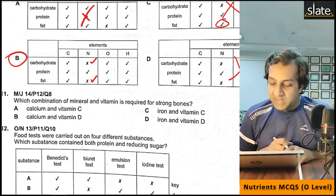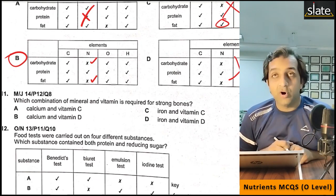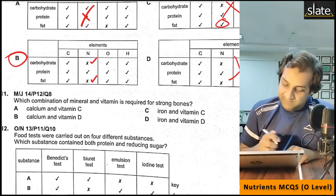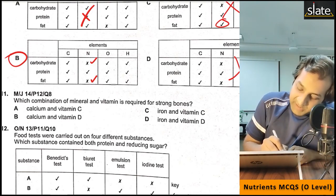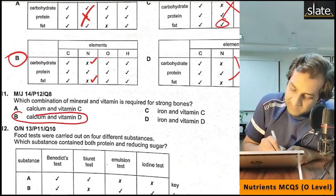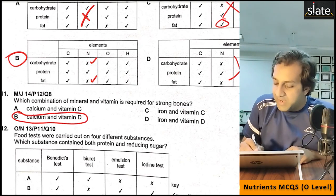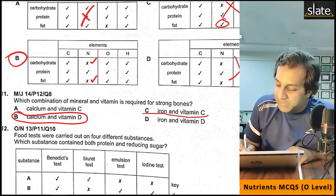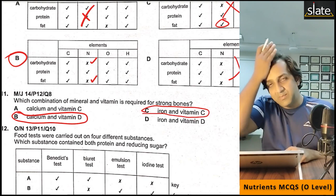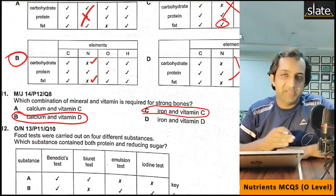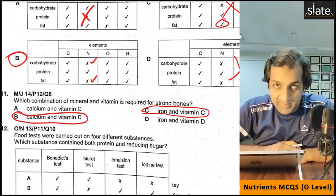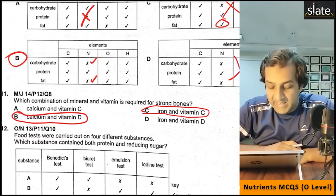What do you need for strong bones? Calcium and vitamin D — calcium and vitamin D for strong bones. Iron and vitamin C are needed so that you don't have anemia and iron deficiency.